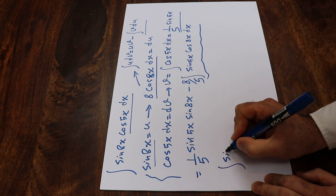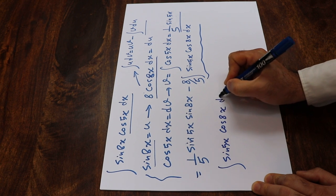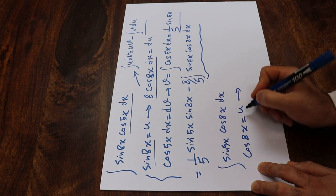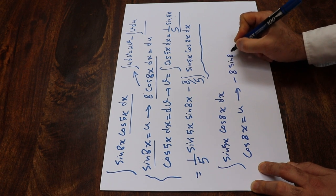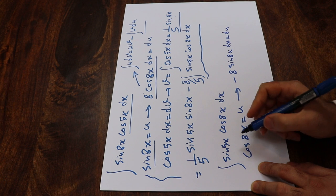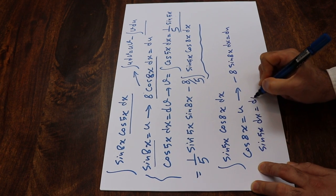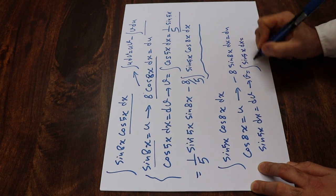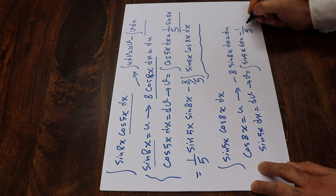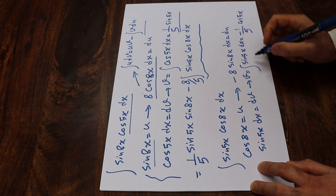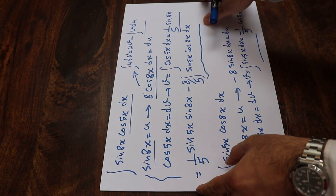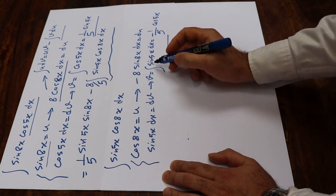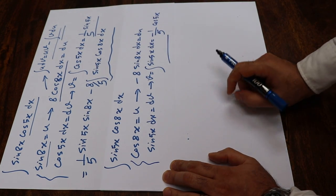Let's solve the integral of sine 5x cosine 8x dx. To solve this integral, here I define cosine 8x as u. If you take the derivative from each side, minus sine 8x dx will equal du. And sine 5x dx will equal dv, therefore v will equal the integral of sine 5x dx, which equals minus 1 divided by 5 times cosine 5x. If it's not clear how to take this integral, write in the comment section and I will explain.